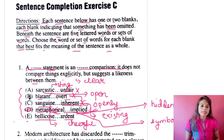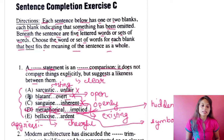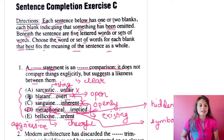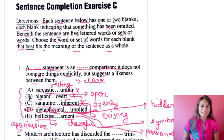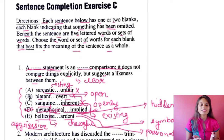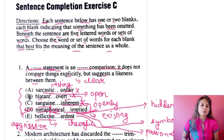Option E is 'bellicose and ardent.' Bellicose means aggressive or belligerent, and ardent means passionate. If I put 'a bellicose statement is an ardent comparison' — a statement can never be aggressive; that's common sense. So option E is wrong. The most appropriate option for this question is option D: metaphorical and implied.